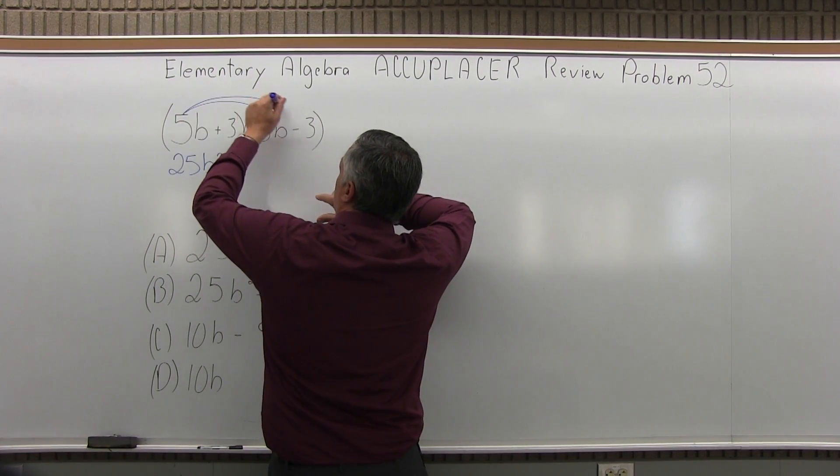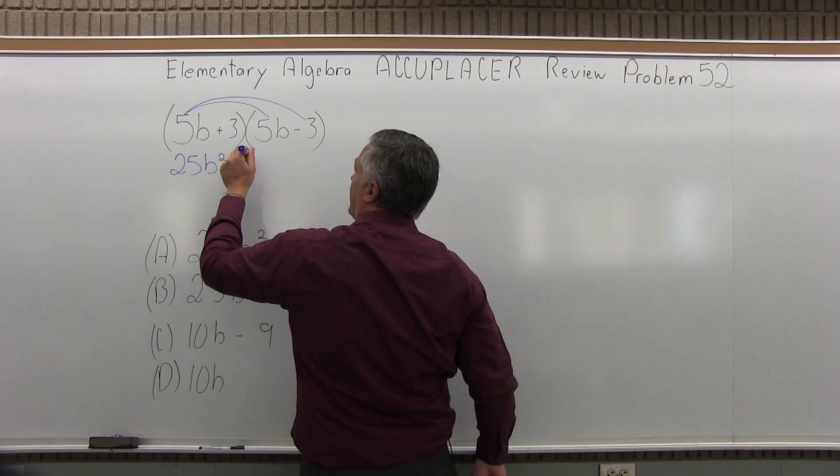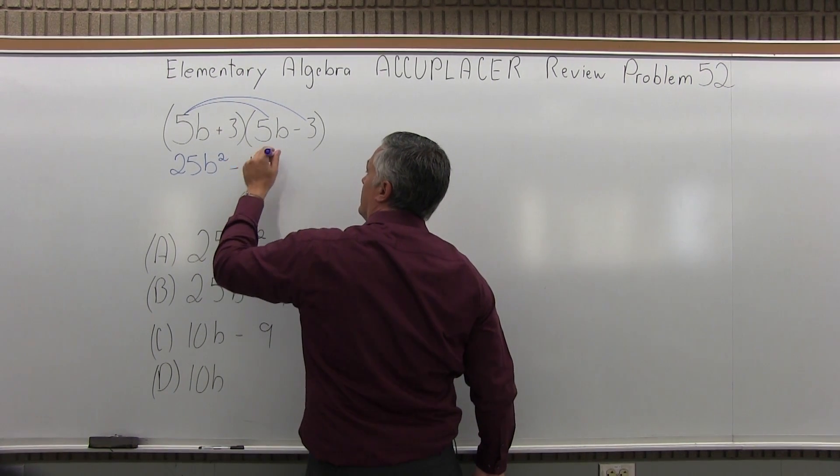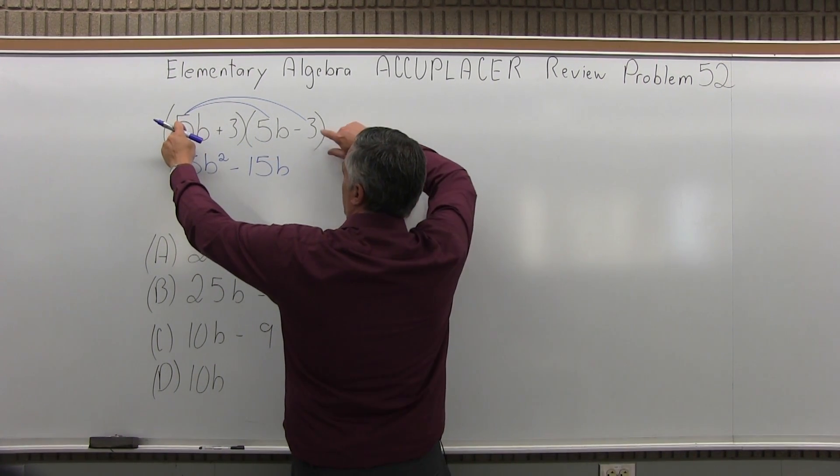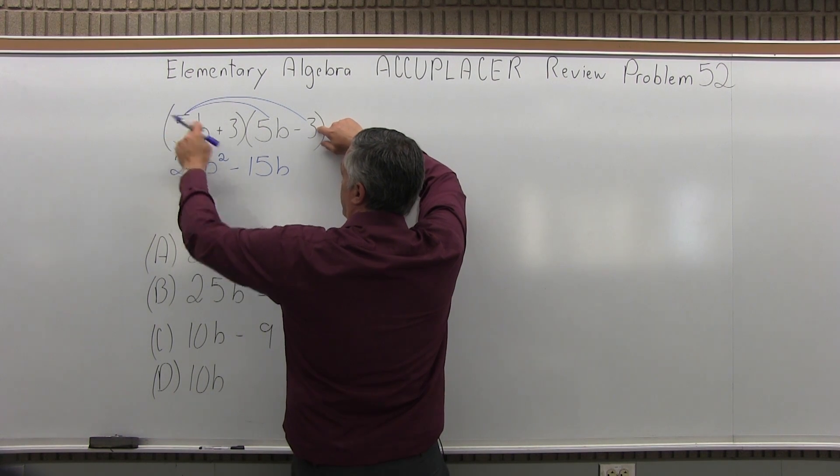And now, 5B times negative 3 would be negative 15B. Again, pay attention to the sign. Positive 5, negative 3 is negative 15, and it's a B.